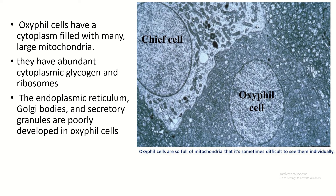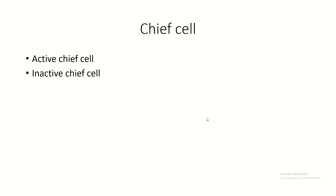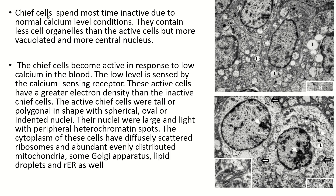This is the chief cell, and you can see the cytoplasm contains less organelles. Chief cells are two types: active chief cell and inactive chief cell. Chief cells spend most of their time inactive due to the normal calcium level condition of the body. They contain less cell organelles than active cells, but are more vacuolated with a more central nucleus.